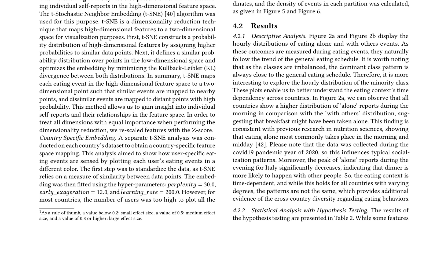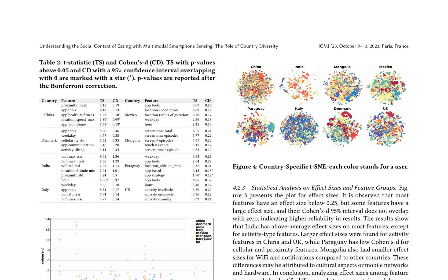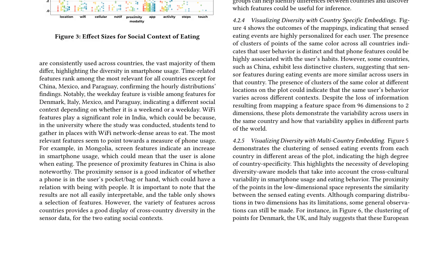The results are presented in Figure 4, where each report is mapped to a two-dimensional point, revealing clusters of similar events. To compensate for overlapping points, an additional density plot is presented where the 2D space is partitioned based on polar coordinates, and the density of events in each partition is calculated, as given in Figures 5 and 6. The research paper presents statistical analysis on effect sizes and feature groups, visualizing diversity with country-specific embeddings, and inferring the social context of eating using different inference methods.